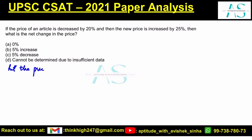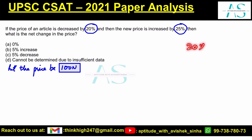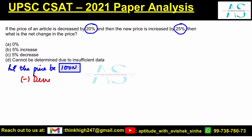Let the price be a particular value. Since we are dealing with percentages, it is always advisable to assume the unknown quantity as a multiple of 100, that is 100n. This way, when you calculate 20 percent, it is written as 20 upon 100, and the denominator cancels out easily, making our calculation simpler. So let the price be 100n. Decrease by 20 percent.